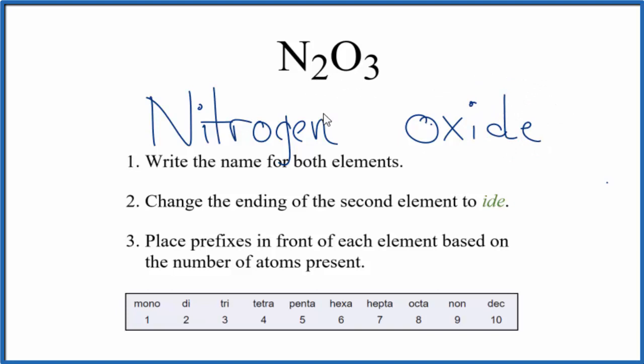So at this point, N2O3, we're calling nitrogen oxide. But we need to deal with these little subscripts here that show the number of atoms. So we're going to use prefixes in front of each element name to show us the number of atoms present. And we'll use this chart here to get our prefixes.